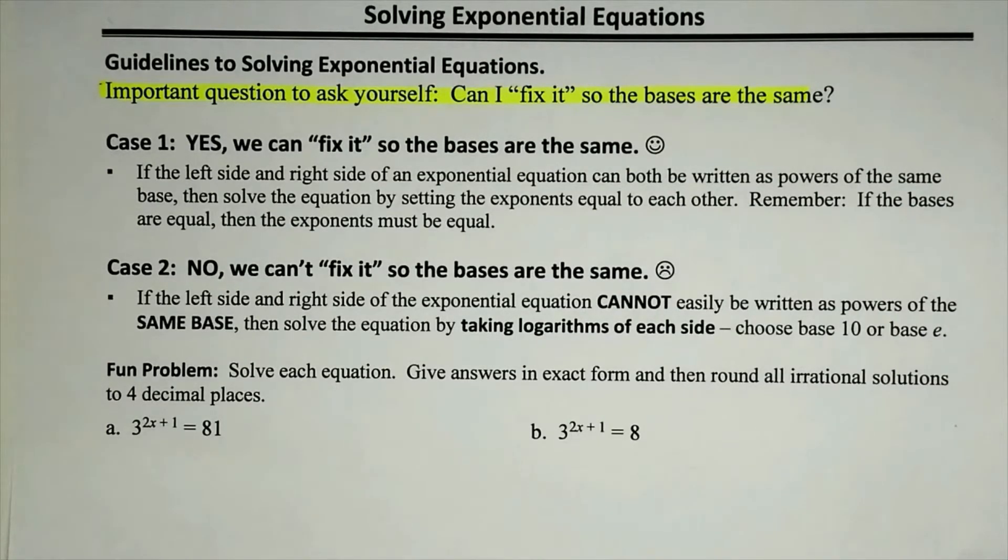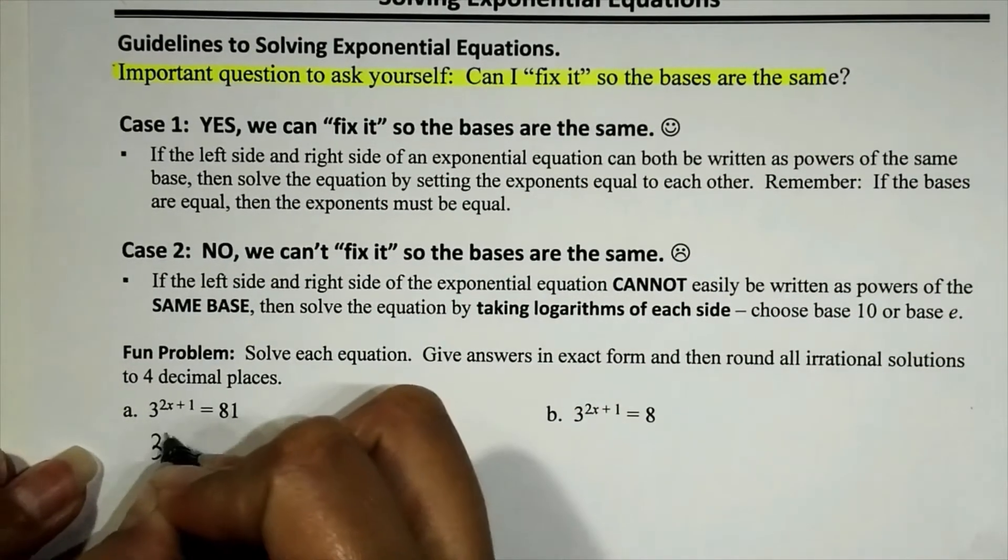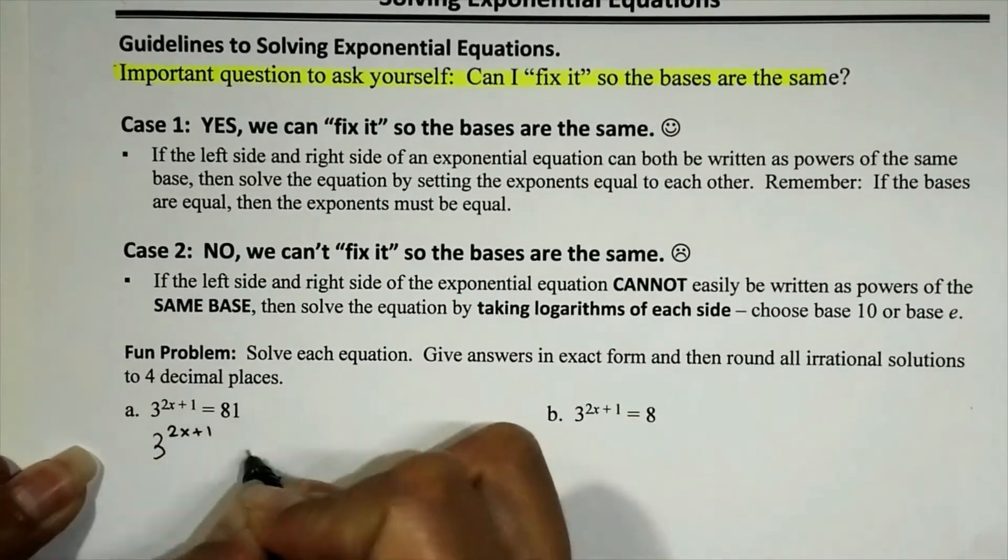So let's go ahead and look at the fun problem. The directions read, solve each equation, give answers in exact form and then round all irrational solutions to four decimal places. Let me go ahead and rewrite the first problem because this font is a little bit too small for my eyes.